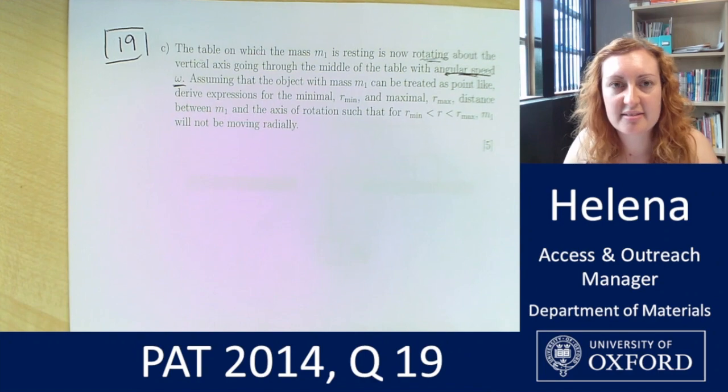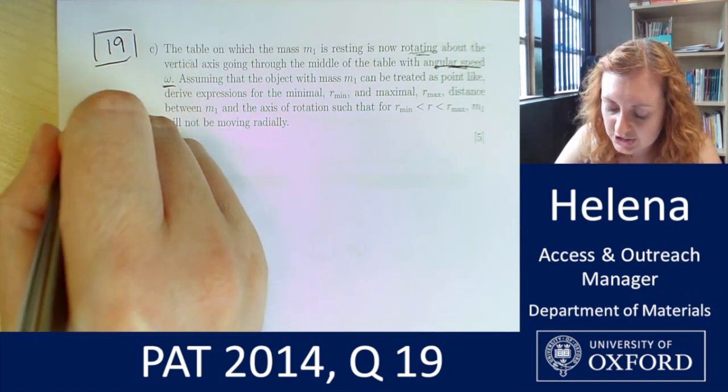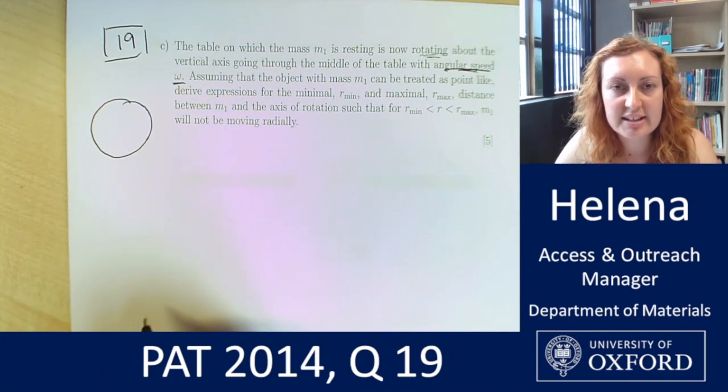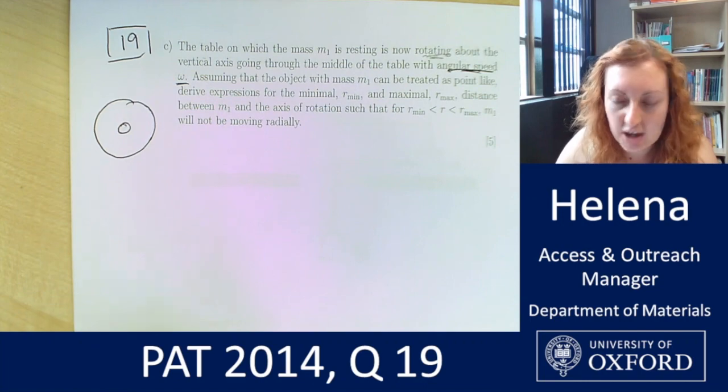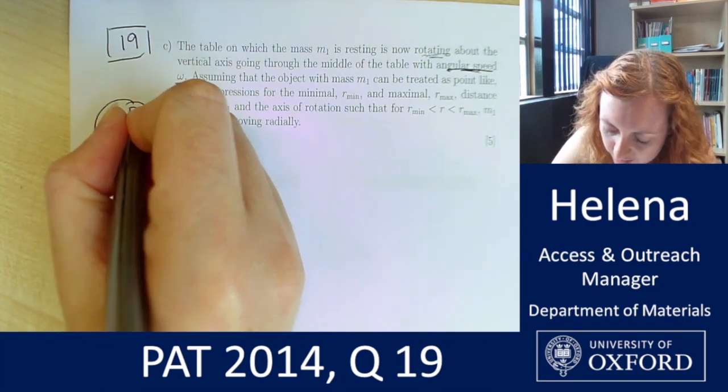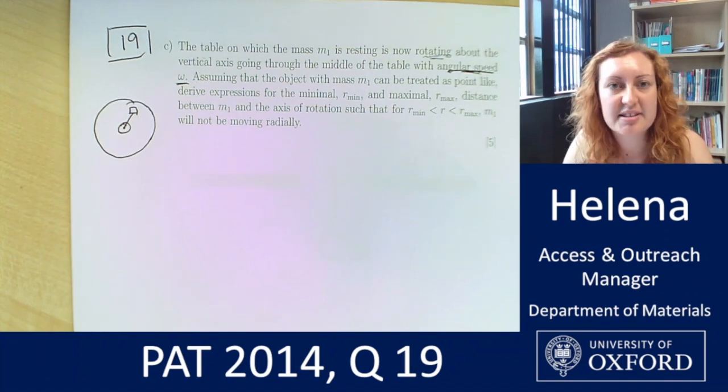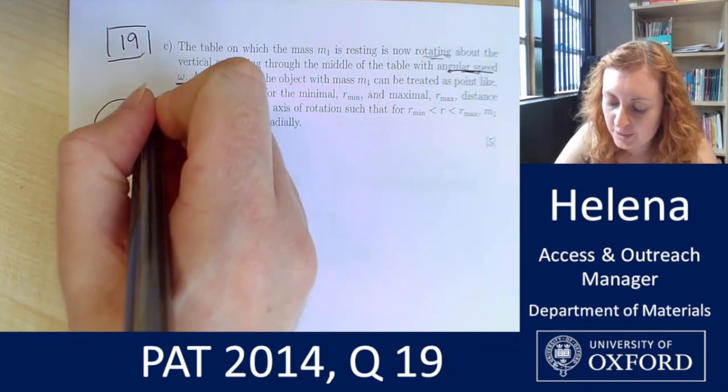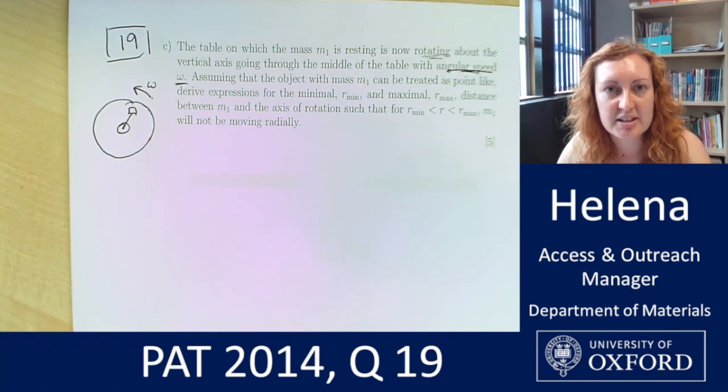Before we get any further in the question let's visualize what's going on. So if we picture a circular table for ease, bird's eye view, so we're looking down on top of the table now, we have that hole in the middle, we have our block M1 connected to block M2 which is hanging down in the center of the hole and we're now rotating this table, so we're spinning it around with an angular speed omega.